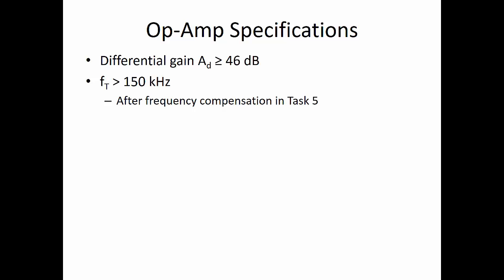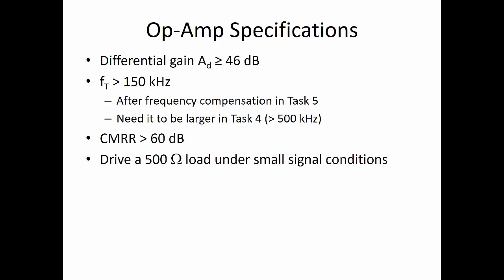Now, this is what it should be after the frequency compensation that you'll do in Task 5 once we study feedback. We need it to be larger in Task 4, so you're probably shooting for something larger than 500 kilohertz, hopefully. The common mode rejection ratio of your operational amplifier should be larger than 60 decibels, and it should be able to drive a 500 ohm load under small signal conditions.